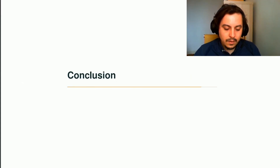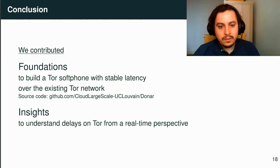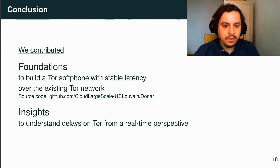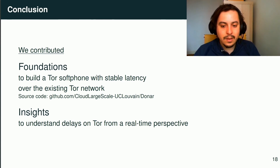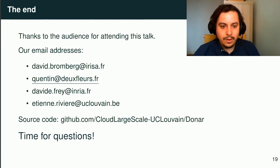To conclude, with Dona we contributed first a foundation to build Tor software with stable latency over the existing Tor network — source code is available on GitHub. Second, we also contributed insights to better understand delays on Tor from a real-time perspective. This is the end of the talk. Thanks to the audience for attending. You can reach us through our email addresses, and I will be happy to answer your questions.